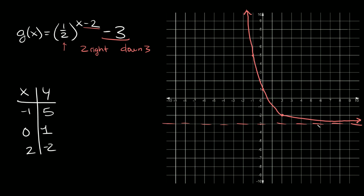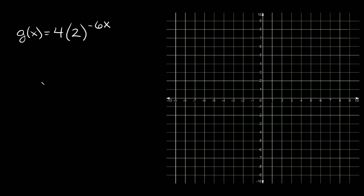So again, here's our asymptote. The domain is always going to be the same — all real numbers. And the range in this case: the smallest y value we have is negative three, and then we go all the way to positive infinity. So our range is from negative three to positive infinity.